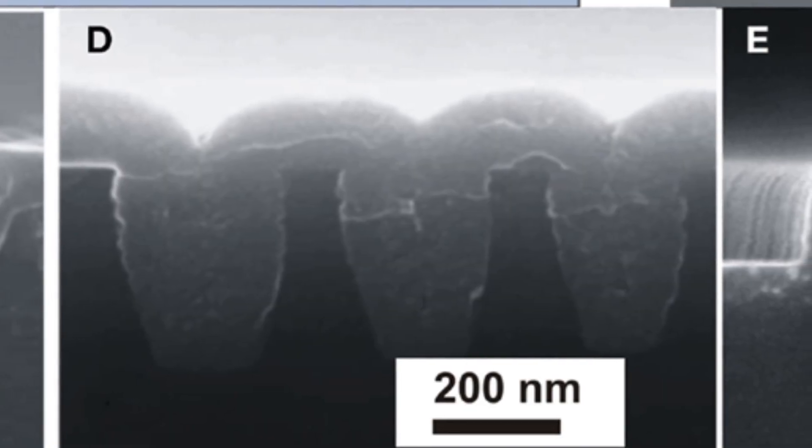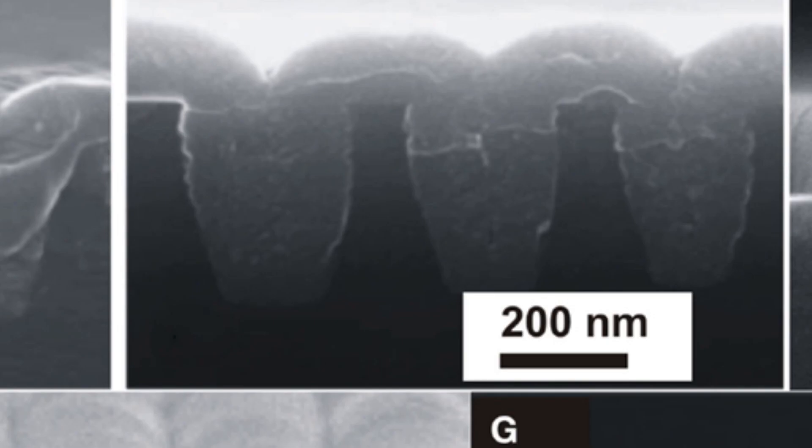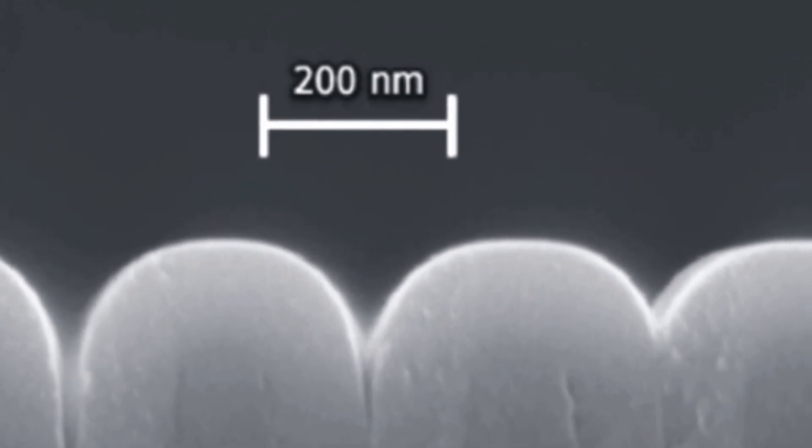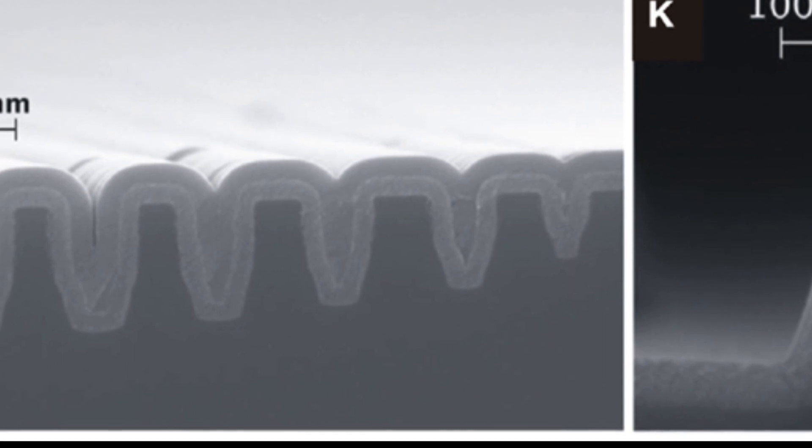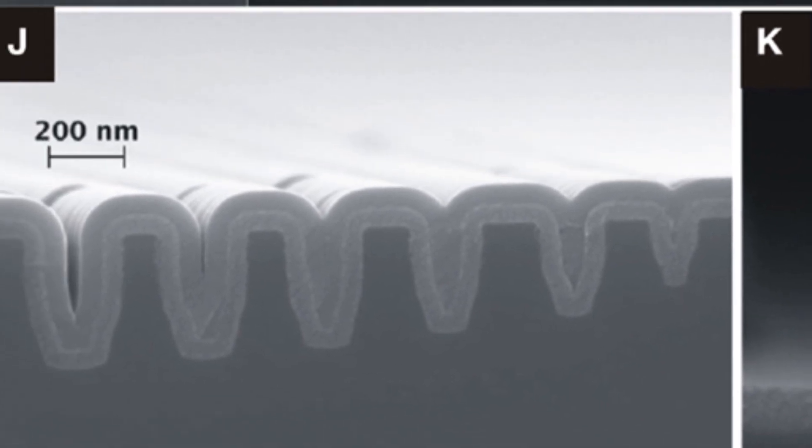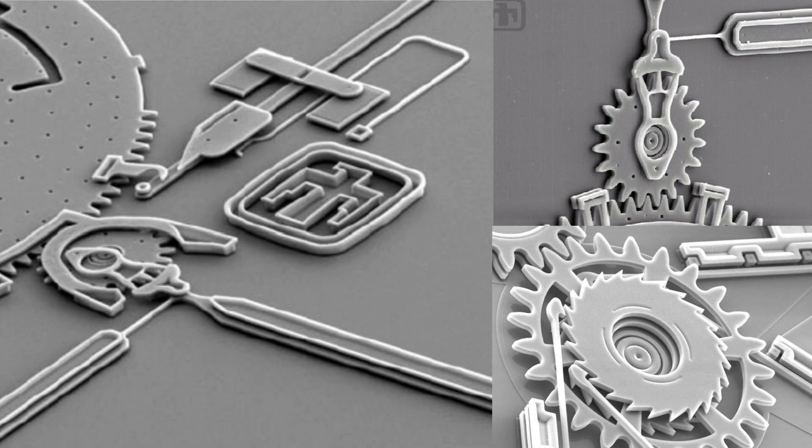Smaller structures. Because you have precise control of how thin the deposited material can be, you also have control, in theory, how wide it can be. This then leads to the creation of micro and nanostructures, from more transistors on the chip to nanomachines.